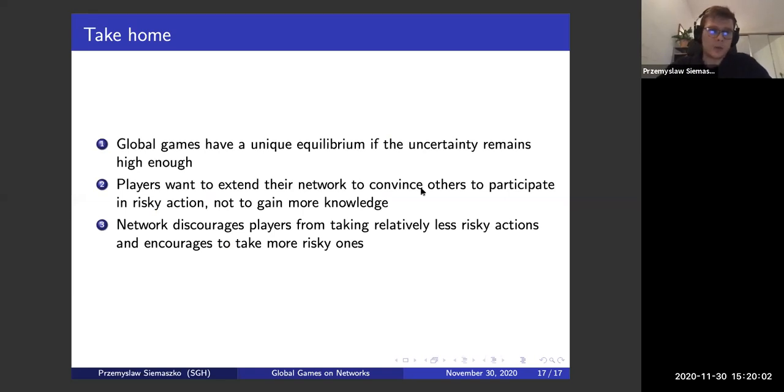So that's it. I just want to leave you with some thoughts that there is a whole spectrum of choices of global games between the classic global game with no network and coordination game. And if there is enough uncertainty in the game, the unique equilibrium exists. And in games of this sort, players will only want to build their network to convince others, to convince others their own views and not to gain more knowledge. And as you've seen, network convinces players to take risky actions and discourages from taking the ones that are risk-free. I'd be happy to answer all your questions if you have any.